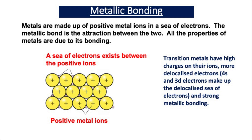The reason that transition metals have different physical properties to group one and two metals is because they have stronger metallic bonding. This is because the charge on the metal ions tends to be higher in transition metals. They have more delocalized electrons — the 4s and the 3d electrons make up the delocalized sea of electrons — and as a result the attraction between the delocalized sea of electrons and the positive metal ions is a lot stronger. The metallic bonding is therefore much stronger in transition metals than in groups one and two, and that's why transition metals are harder, stronger, and have higher melting points, boiling points and densities.